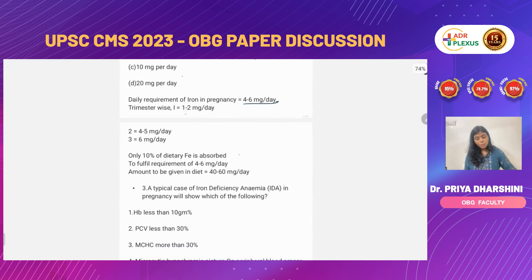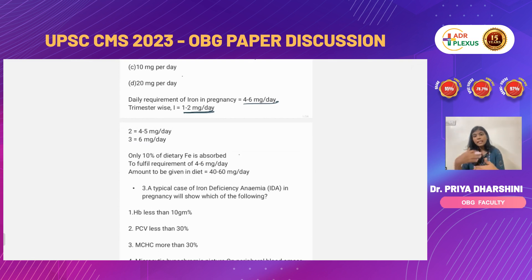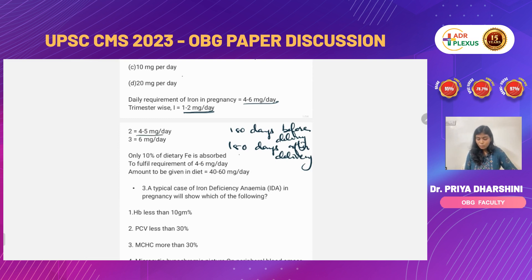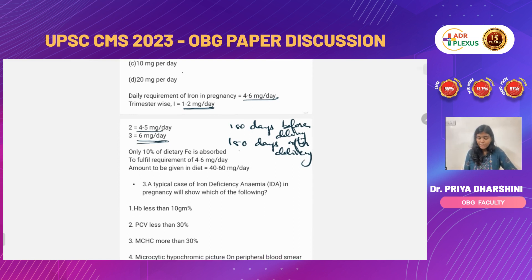Trimester-wise: for the first two trimesters the requirement is 1 to 2 milligrams per day. In the first trimester there will be vomiting and nausea, so giving iron can increase acidity and worsen nausea. We start from the second trimester, minimum 180 days before delivery and 180 days after delivery. The trimester-wise requirement: first trimester 1–2 mg/day, second trimester 4–5 mg/day, and third trimester 6 mg/day.